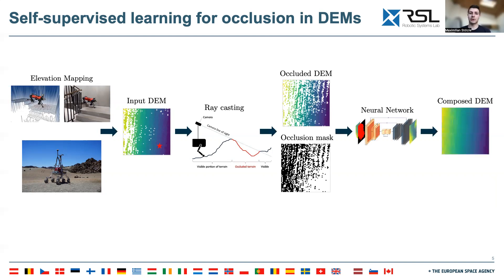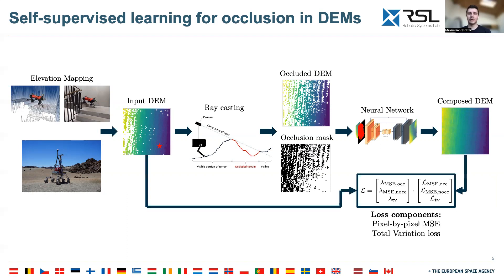We pass the occluded DEM through an encoder-decoder neural network to receive a reconstructed DEM. Next, we compute the reconstruction loss between the reconstructed DEM and the input DEM. Finally, the neural network weights are updated.